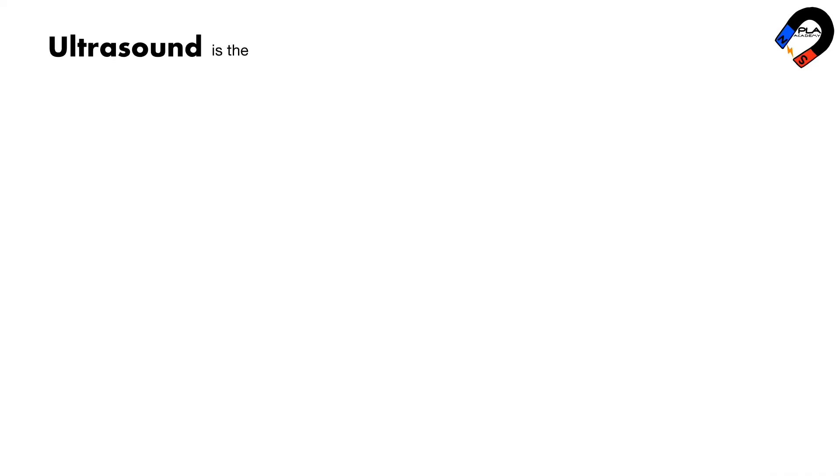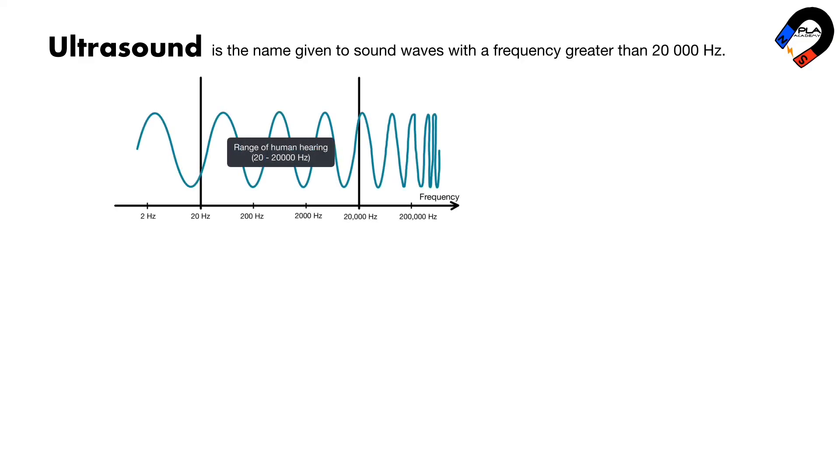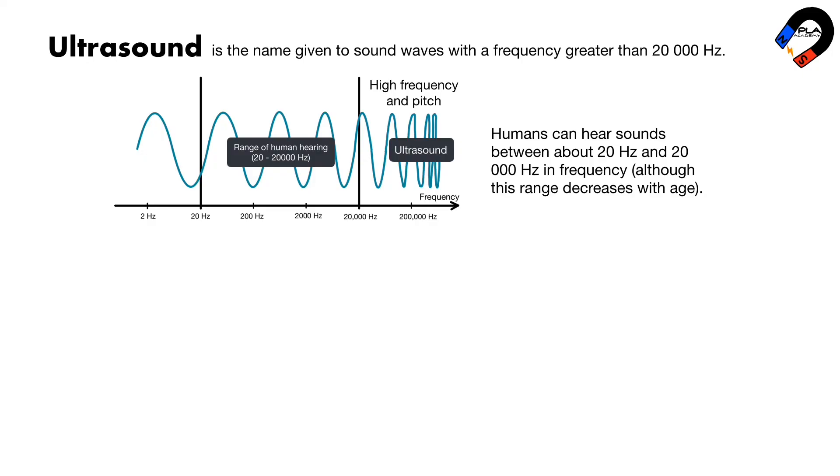Ultrasound. Ultrasound is the name given to sound waves with a frequency greater than 20,000 hertz. Humans can hear sounds between about 20 hertz and 20,000 hertz in frequency, although this range decreases with age. So, the frequency of ultrasound is beyond the range of human hearing. The sound with frequency lower than 20 hertz is called the infrasound.